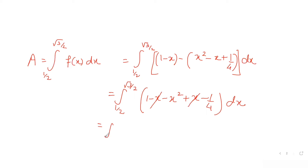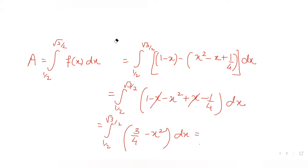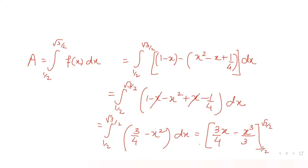Expanding the integrand: 1 - x - x² + x - 1/4. The x terms cancel, leaving us with (3/4 - x²) dx from 1/2 to √3/2. Integrating: 3/4 · x - x³/3, evaluated from 1/2 to √3/2.